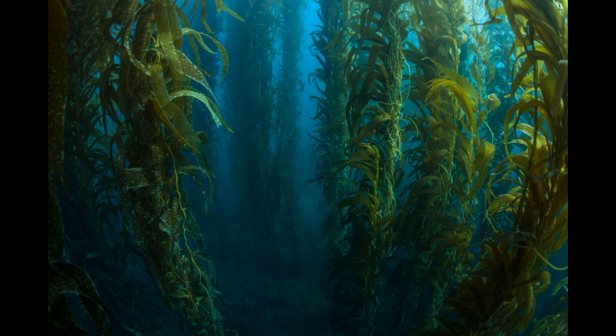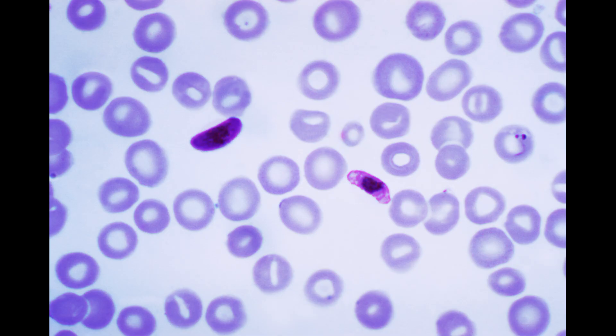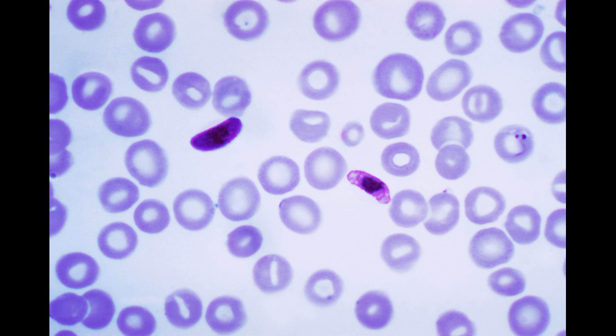This is the case with photosynthetic chromists such as kelp. They may look like plants on the outside, but they are actually more closely related to Plasmodium, the parasite that causes malaria, which curiously have chloroplast-derived plastids that are no longer capable of performing photosynthesis.